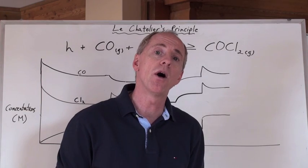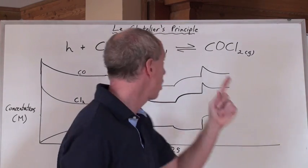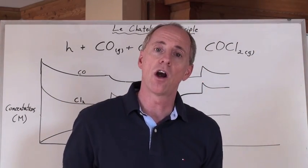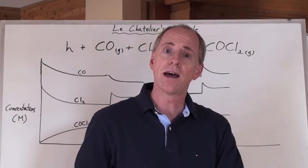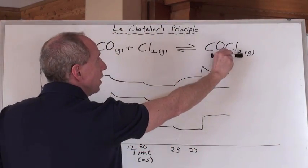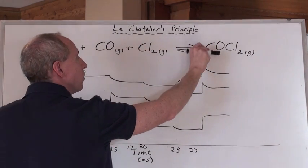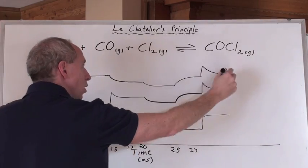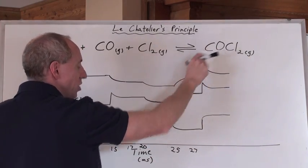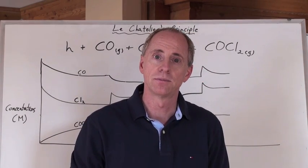Now how does the reaction respond here? If you actually increase the pressure, which is increasing the concentrations of everything, that's when all the concentrations went up. Then you shift to the side where there are less moles of gas. And so the reaction shifts to the COCl2, because there's only one mole of that, but two moles of gas here. Shifts to the right, and therefore less CO, less Cl2, but an increase in the COCl2, because the reaction shifted that way. That's how you read these equilibrium graphs.